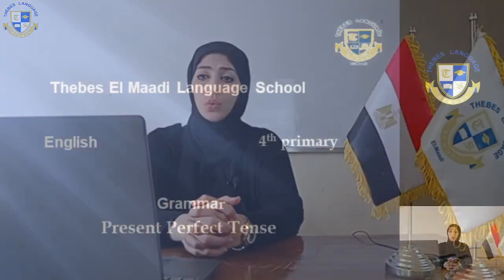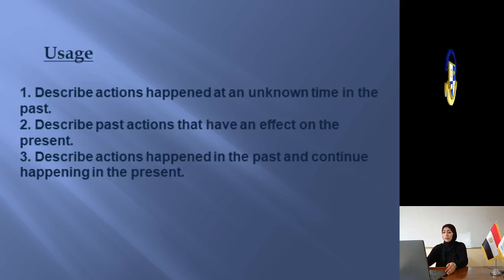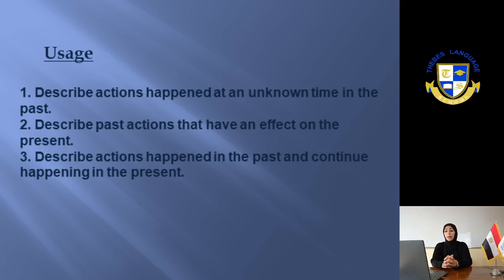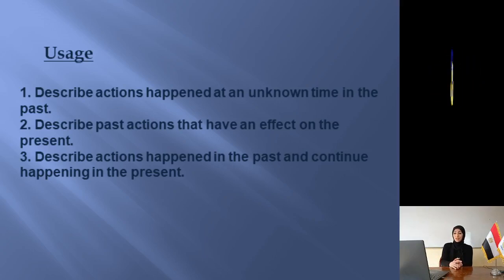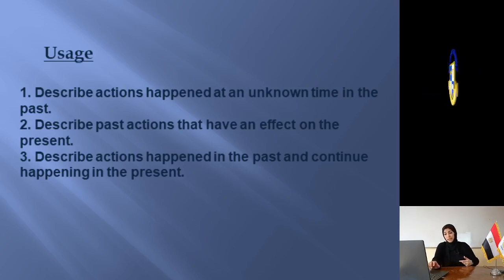Let's check the presentation together. The first slide is the usage. Number one: describing an action that happened at an unknown time in the past — I don't know when, but it's in the past. Number two: describe past actions that have an effect on the present. Number three: describe actions that happened in the past and are continuing to happen in the present.